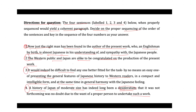Sentence three says it would indeed be difficult to find anyone better fitted for the task of presenting the general features of Japanese history. But if you look at sentence four, it seems like an introductory sentence, because it states 'A history of Japan of moderate size has indeed long been a desideratum.' So statement four introduces the theme of the sequence, which is a history of Japan. It also mentions the want of a proper person, which is why this work took such a long time.